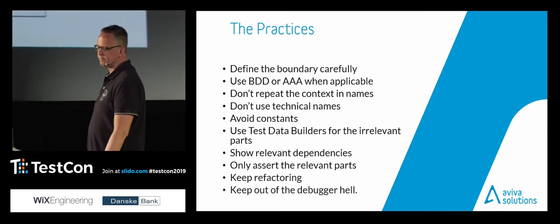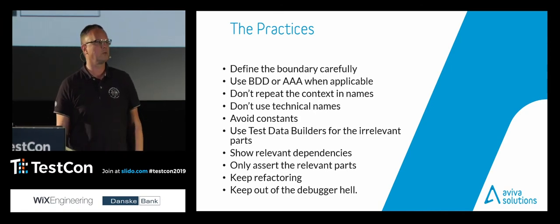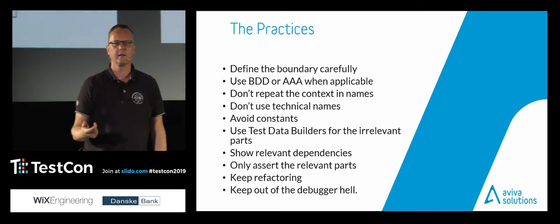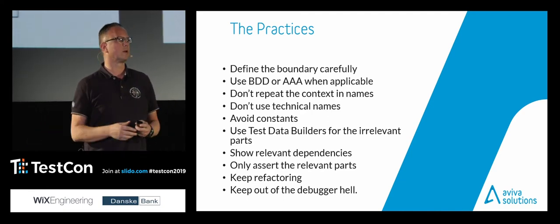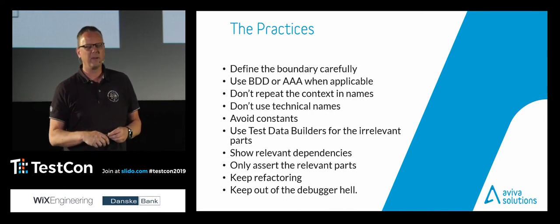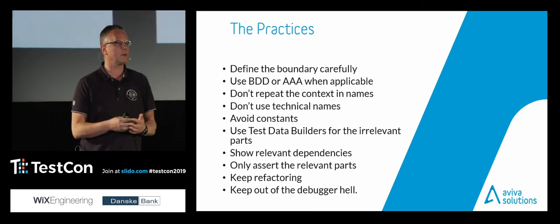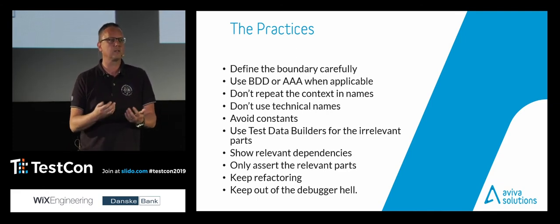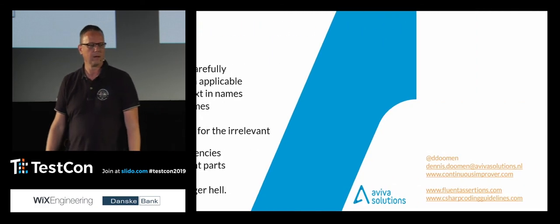Keep refactoring. And keep out of debugger hell — there's a guy in the .NET space called Jeremy D. Miller who wrote this about 15 years ago: if you need to go into a debugger to figure out why your test is failing, you're doing something wrong. It doesn't always work out like that — I have bad days too — but it's a good heuristic to follow. If it keeps happening, ask yourself: can you make your test more readable? Are the error messages clear? Is the title correct? All of this really matters.